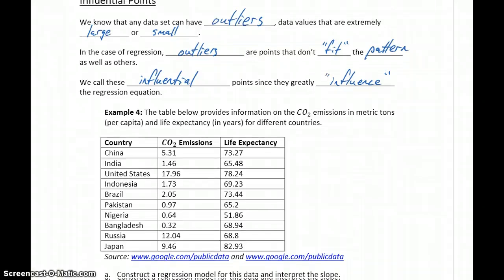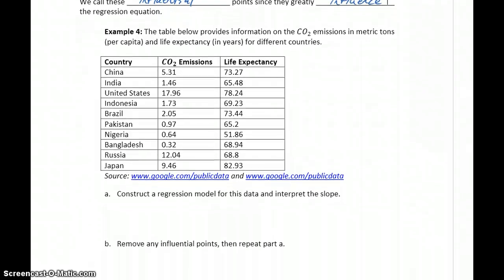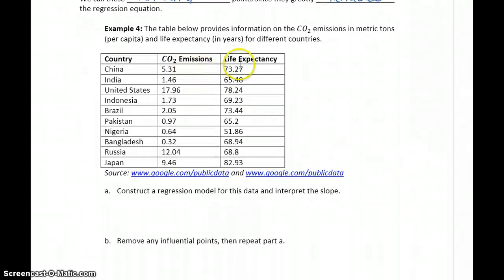In our last example, we want to take a look at this information on CO2 emissions versus life expectancy for different countries. Now, this is data that potentially has a cause and effect relationship. What we're talking about is CO2 emissions, so meaning increased pollution, and life expectancy.